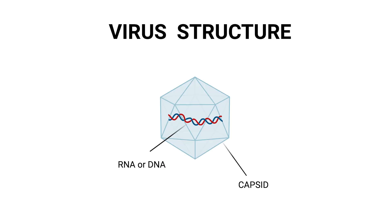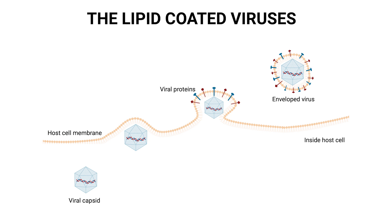Let's start with the basics. Viruses are incredibly simple structures made up of genetic material, either DNA or RNA, protected by a protein coat called a capsid. But some viruses go a step further — they steal a piece of the host cell's membrane to form a lipid envelope around themselves. These are what we call enveloped viruses. Famous examples include influenza virus, coronaviruses, and herpesviruses.